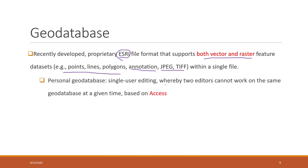There are several types of geodatabases. The first one is called the personal geodatabase, which is actually based on Microsoft Access. If you are using ArcMap, which is an older version of ArcGIS, you can create a personal geodatabase that can be opened by Access directly. This is the older version of the geodatabase.